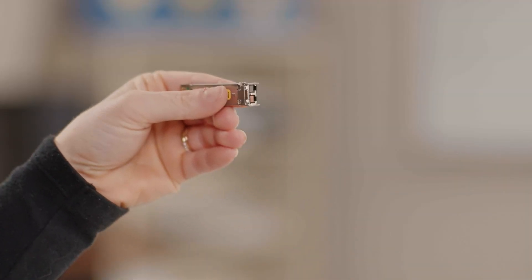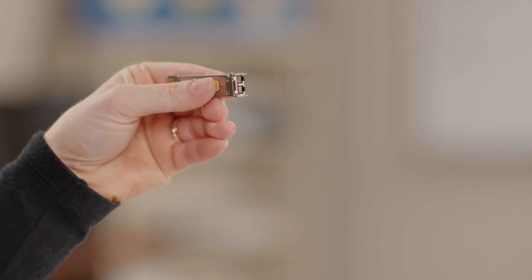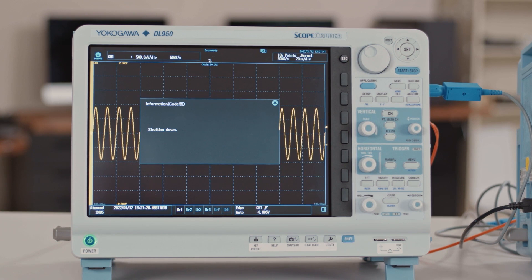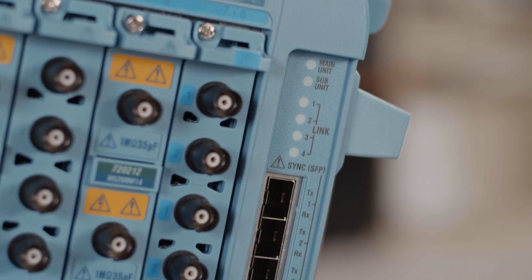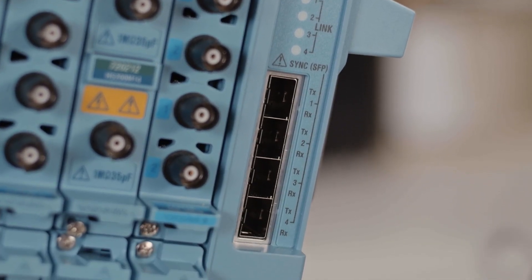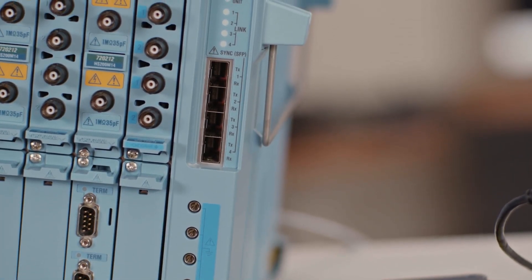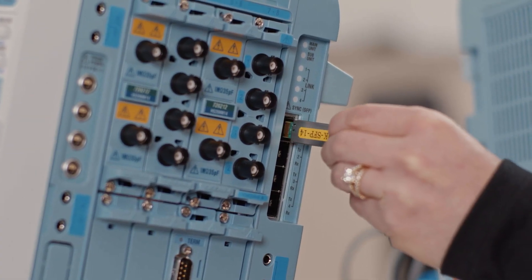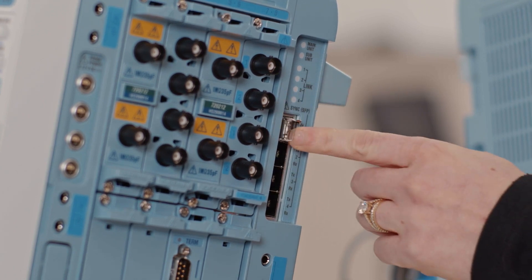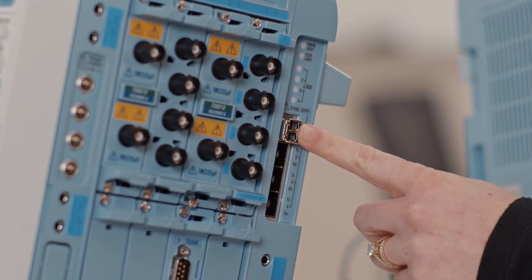To make the physical connection between multiple DL950s, you'll need to install the SFP modules and connect the optical cords. To install the SFP modules, start with the DL950s turned off. Insert the modules into the link connectors on the right side of the instrument. Tilt the latch lever down and align the SFP module with the guide on the link connector. Slowly push it in until you hear a click.